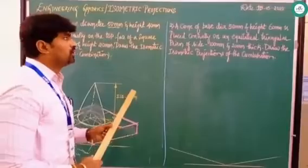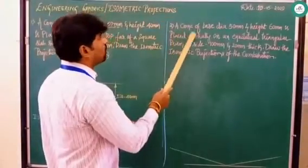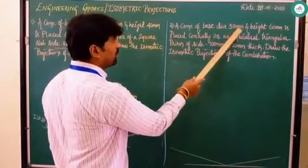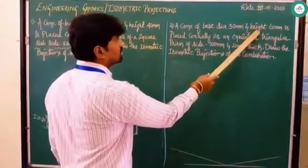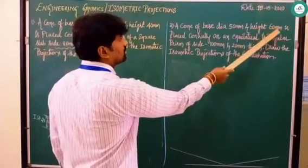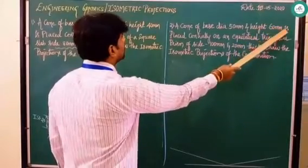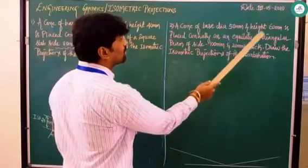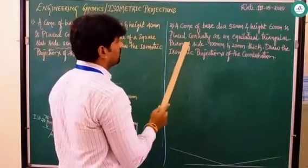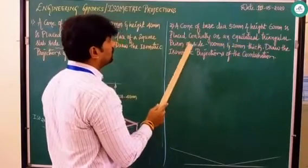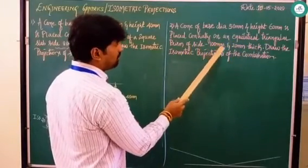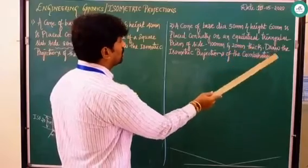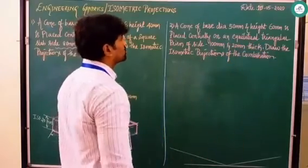Coming to the second question: a cone of base diameter 50 mm and axis or height 60 mm is placed centrally on an equilateral triangular prism of side 100 mm and 20 mm thick. Draw the isometric projection.